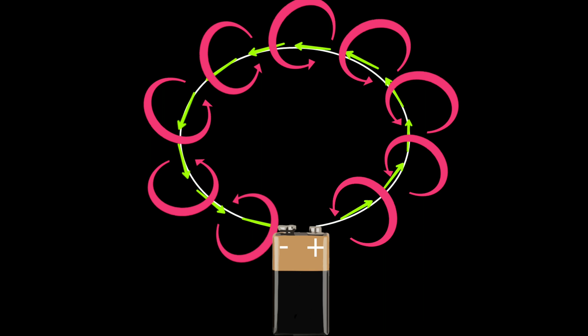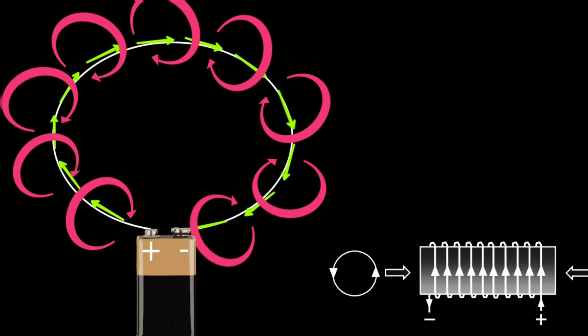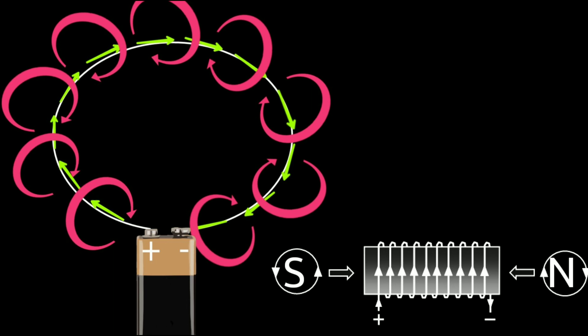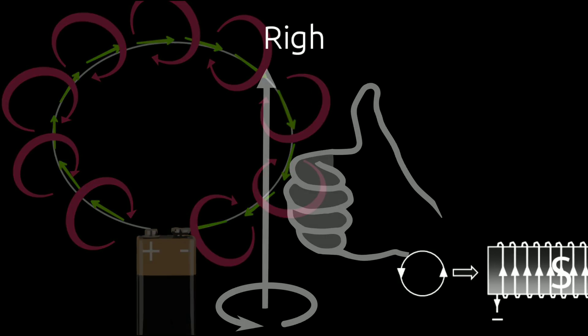The biggest advantage of an electromagnet is that the polarities can be changed by reversing the flow of current. To find the polarity of electromagnets, we use the right-hand rule.